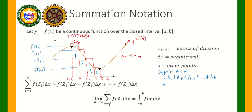So the formula for the approximate area is: f of z sub 1 times delta x, plus f of z sub 2 times delta x, plus dot dot dot, plus f of z sub n times delta x. That is the formula for the approximate area under the curve.